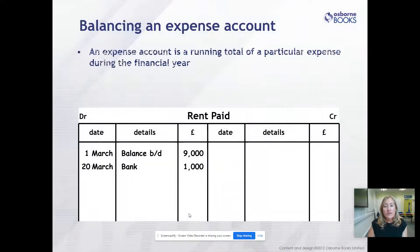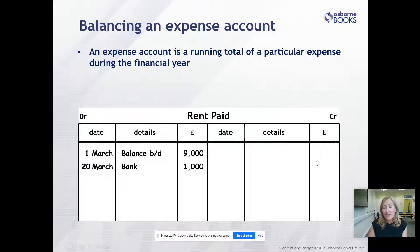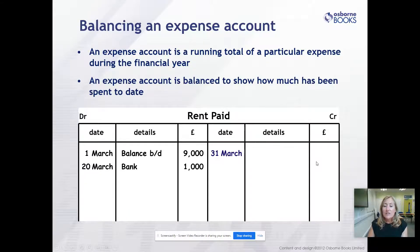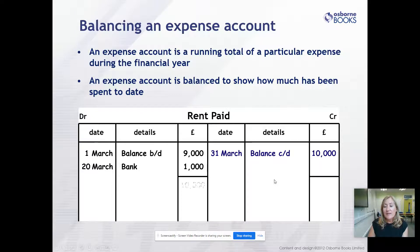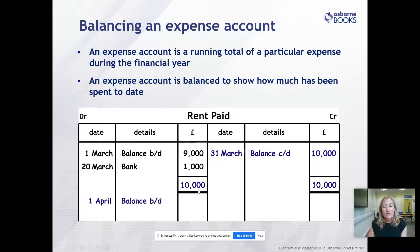For an expense account, we should find entries just on the debit side. Here we have 1st of March BALBD £9,000, and on the 20th of March we paid another £1,000. There's nothing on the credit side, so we just add up the total: 9 plus 1 is £10,000. Balance carried down into April is £10,000. We rule it off to prove both sides of the account are equal, and on the 1st of April we have a balance brought down of £10,000.